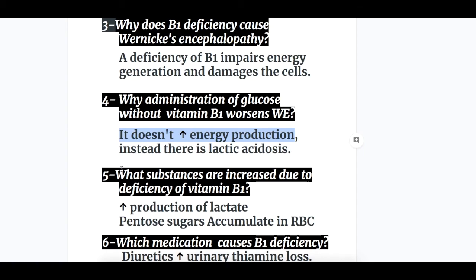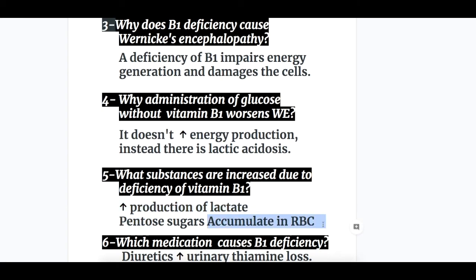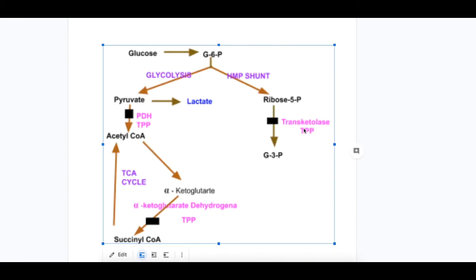Question number five: what substances are increased due to the deficiency of vitamin B1? Number one, increased production of lactate causing lactic acidosis. Number two, pentose sugars accumulate in the RBC due to decreased activity of transketolase in the HMP shunt pathway. Normally, transketolase converts ribose-5-phosphate to G3P, which joins the glycolytic pathway.